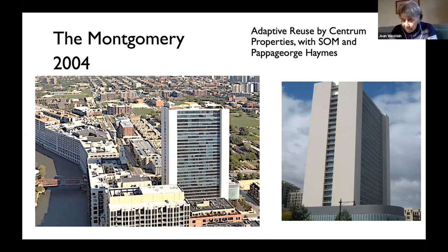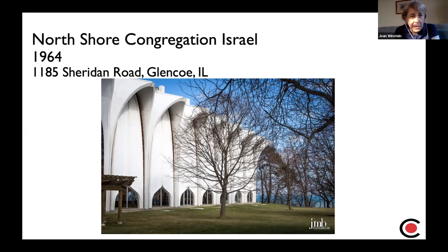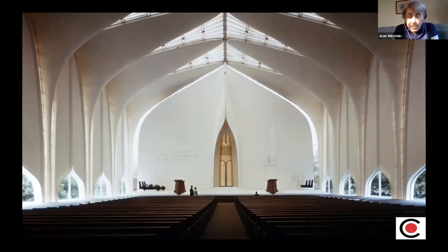Yamasaki also designed another building in Chicago that some may be very familiar with: the North Shore Congregation Israel Synagogue that went up in 1964, near Evanston, very near the lake. It features eight pairs of fan vaults made out of reinforced and precast concrete, 55 feet tall, about 60 meters. In those fan vaults there are ribbons of windows, and at ground level you also see some windows and doors — somewhat unusual in synagogue architecture. This design by Yamasaki features a tremendous amount of light. Yamasaki called the sanctuary 'the confluence of daylight and solids.'